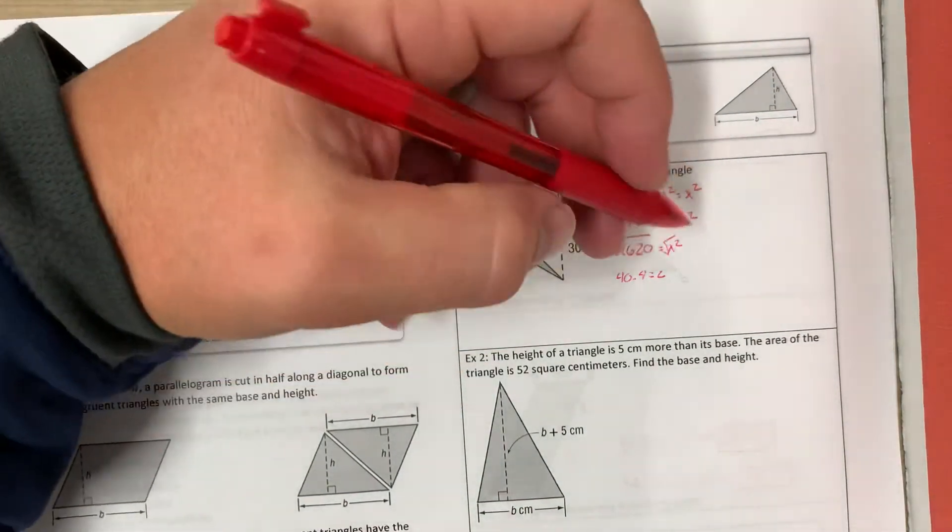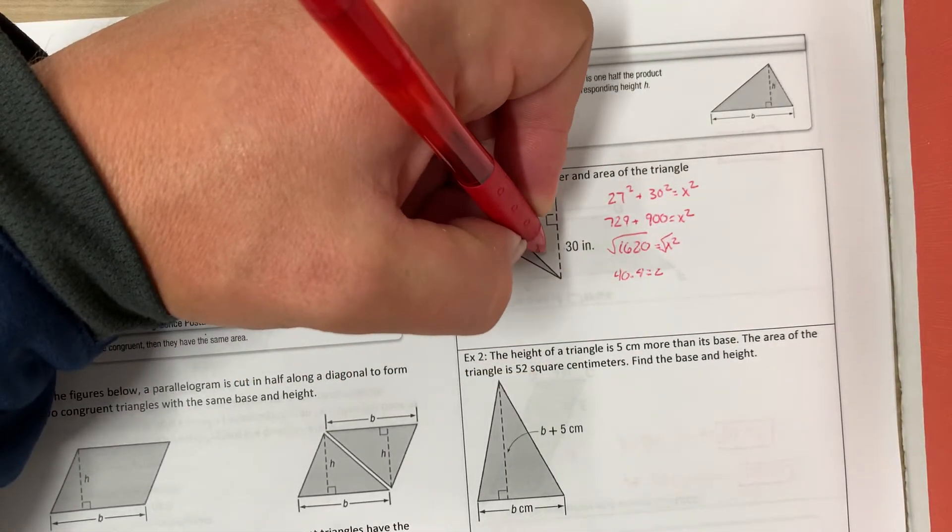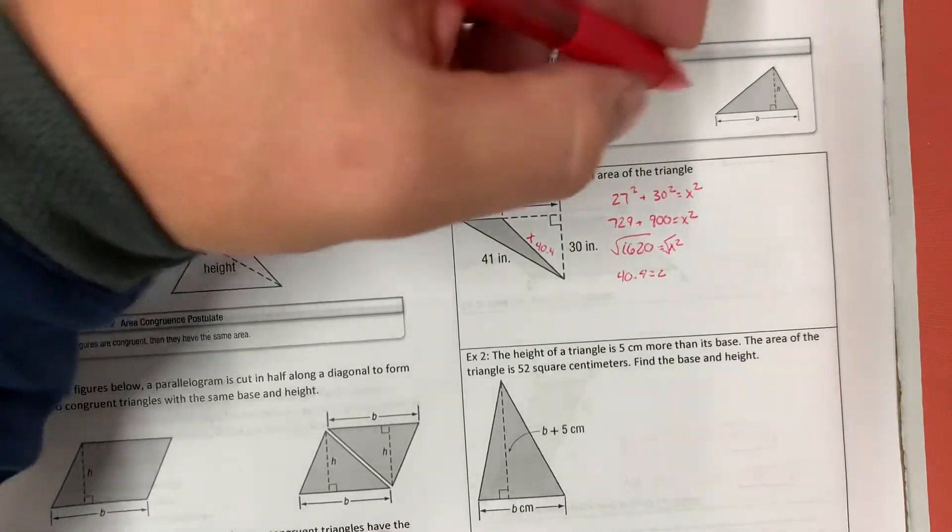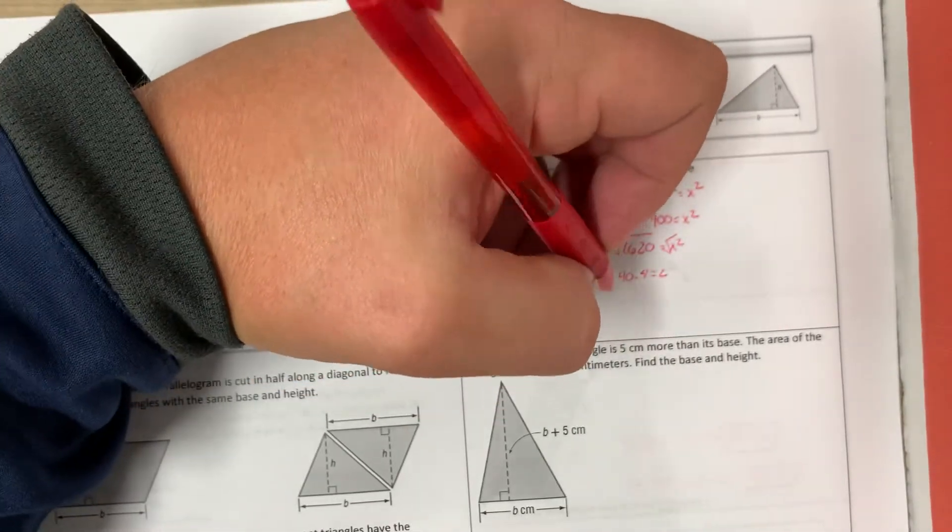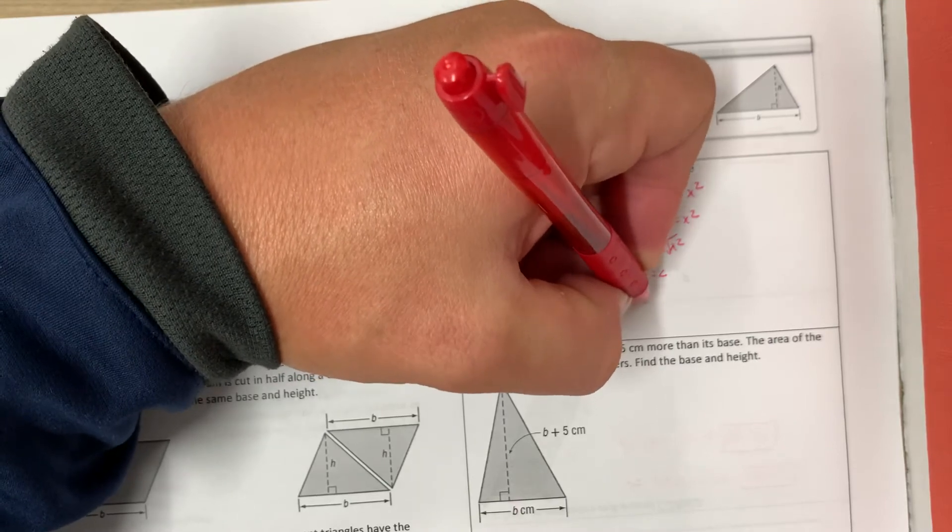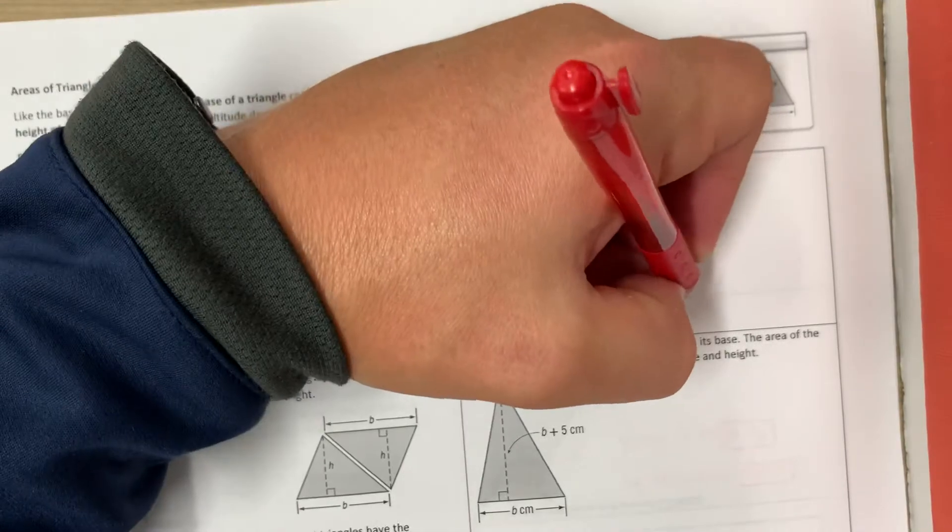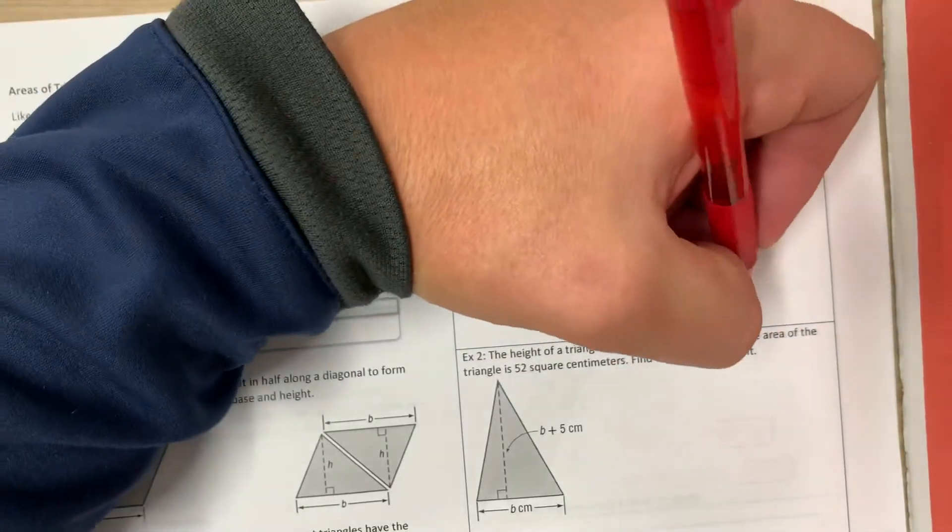So C, this is going to be 40.4. And so now the perimeter is going to be 40.4 plus 19 plus 41, which is equal to 100.4.